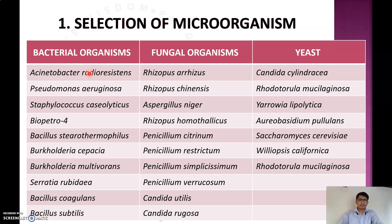Some examples of bacterial organisms are Pseudomonas aeruginosa, Staphylococcus, Serratia rubidaea, Bacillus coagulans, Bacillus subtilis, etc. Some examples from fungal organisms are Rhizopus aureus, Rhizopus nigra, Penicillium citrinum, Penicillium restrictum, Candida utilis, etc. Some examples from yeast sources are Candida cylindracea, which is the most commonly used microorganism for the production of lipase.